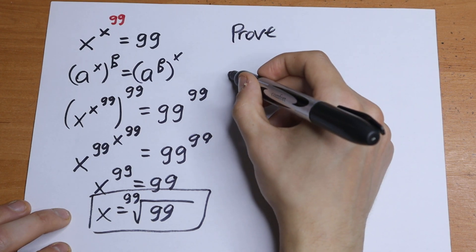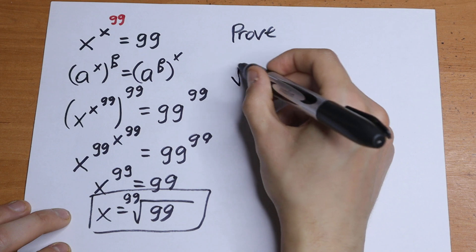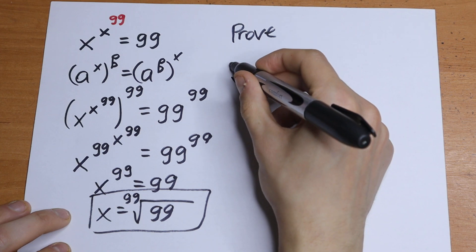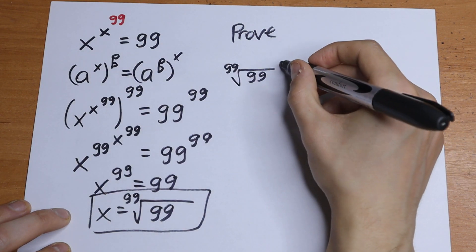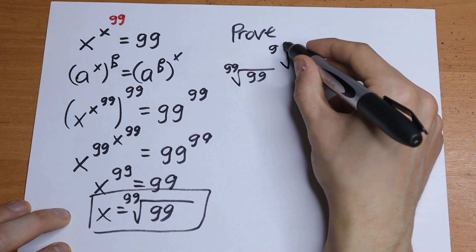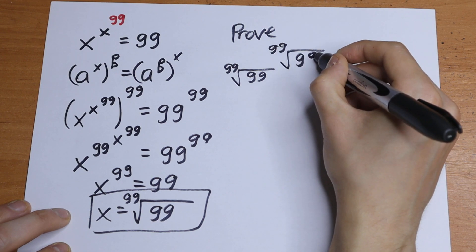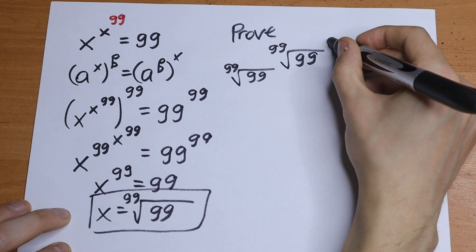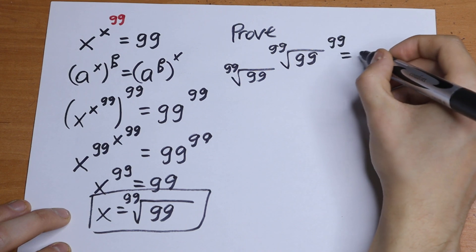Proof: We will have 99th root of 99, raised to the 99th root of 99, raised to the 99th power, equal to 99.